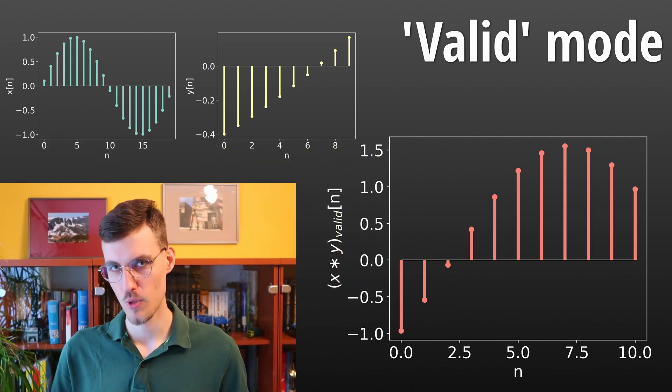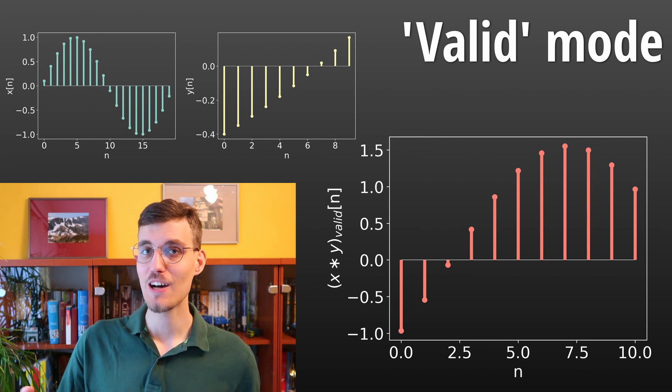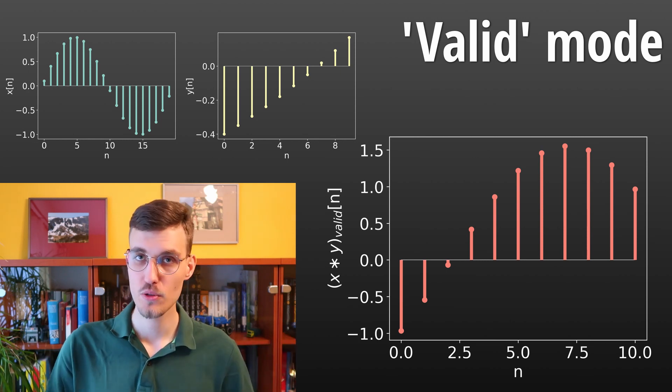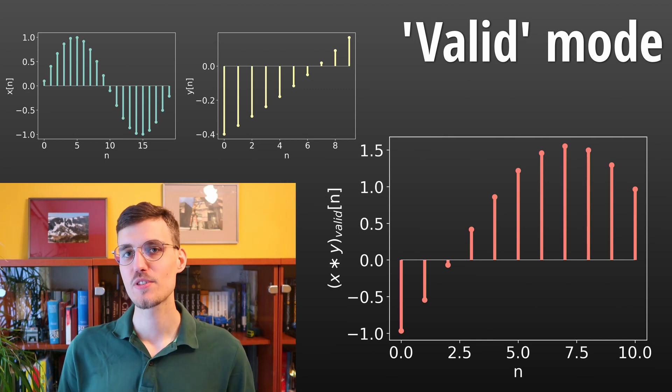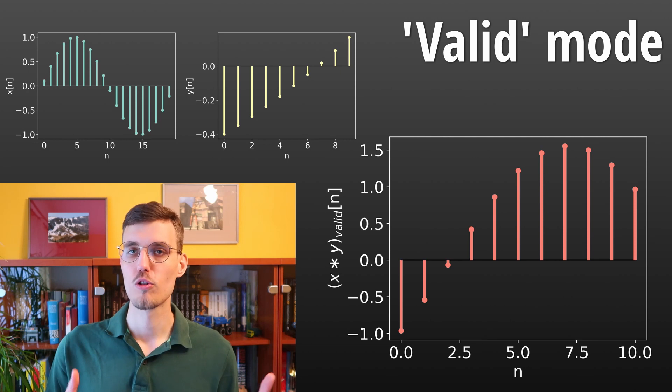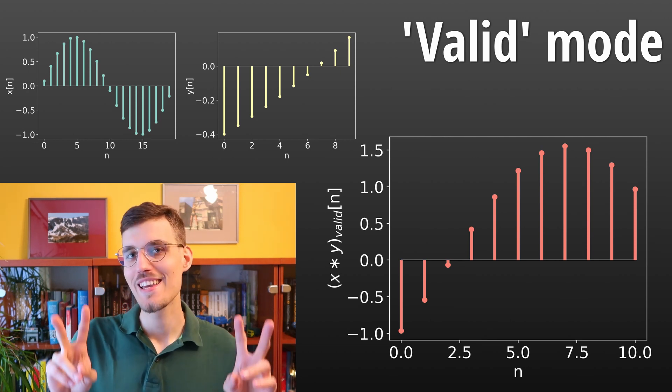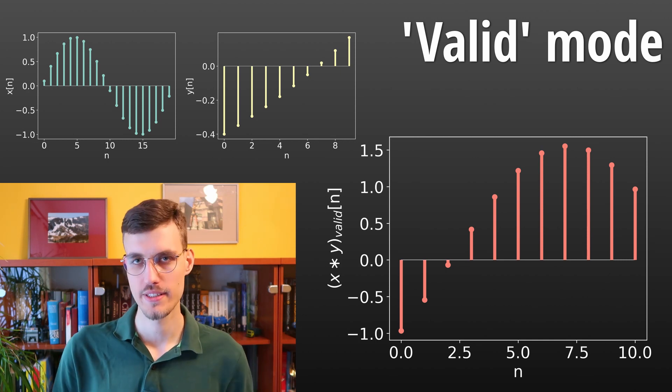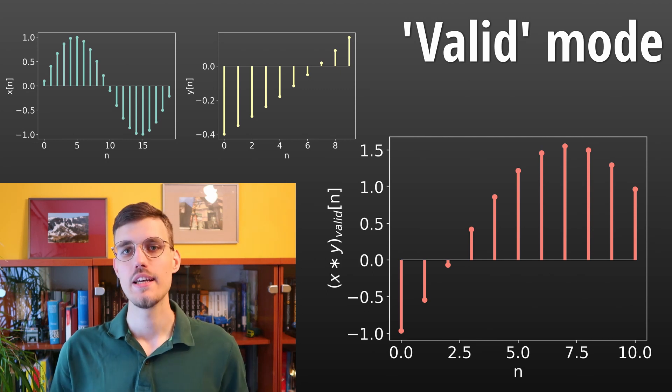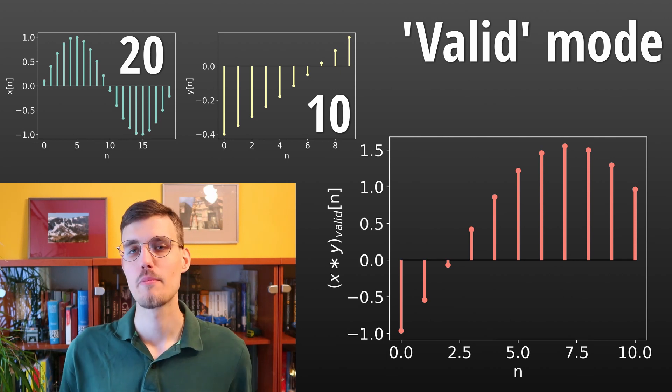The valid mode of convolution is the opposite of the full mode. In valid mode, we only get the samples at the output for which the two signals completely overlap. In other words, all shifts for which the shorter signal is completely inside the longer signal. The length of the output in the valid mode of convolution is the length of the longer signal minus the length of the shorter signal plus 1.